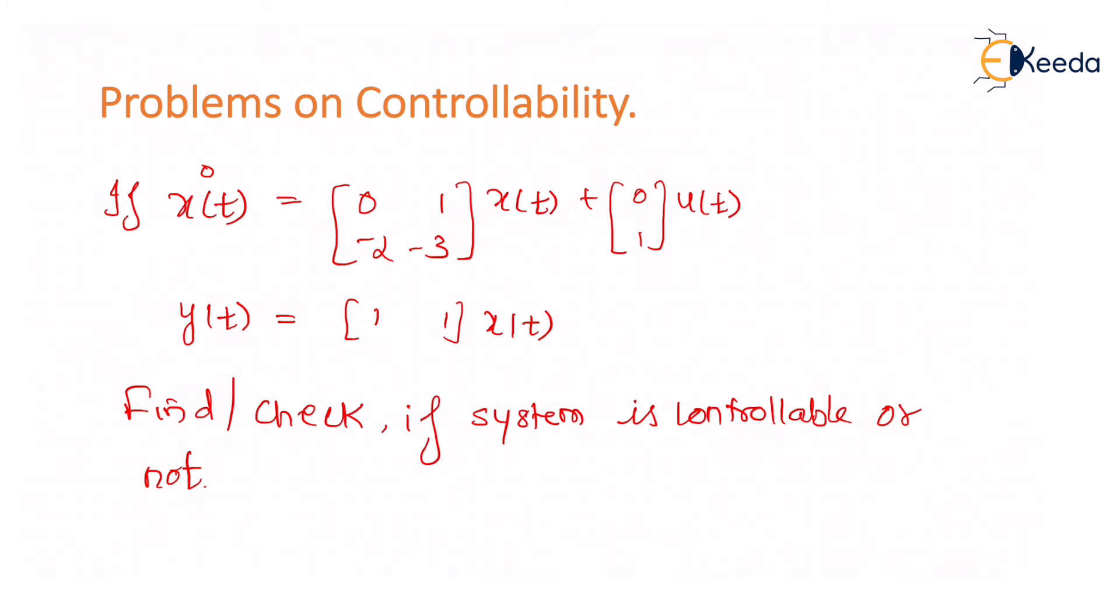But let us start this problem first. The statement says x dot is equal to A times x, where A is [0 1; -2 -3], plus B times u where B is [0; 1]. So this matrix is my A matrix and this is my B matrix.